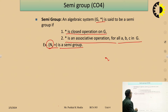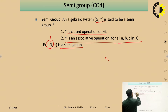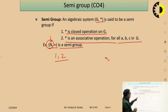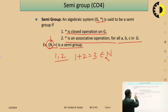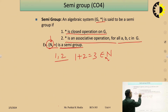Why is (N, +) a semi-group? Because plus is a binary operation which is closed under natural numbers. If we take any two natural numbers, like 1 and 2, the addition of these two natural numbers is also a natural number. So 1 + 2 = 3, which is also an element of N. So (N, +) is a semi-group because it performs the closed operation and also holds the associative property.